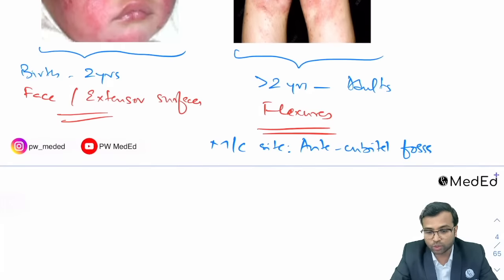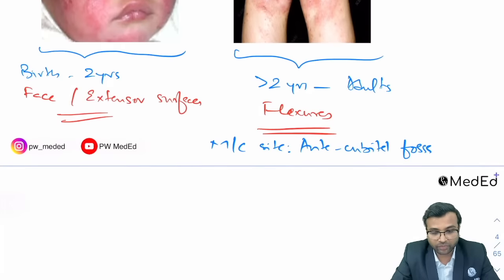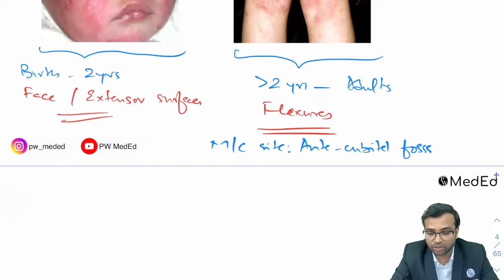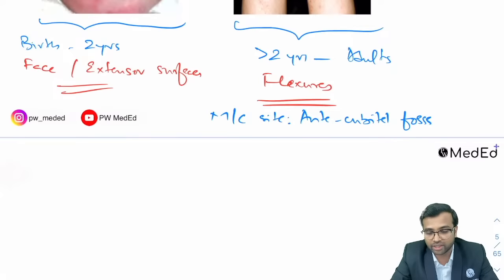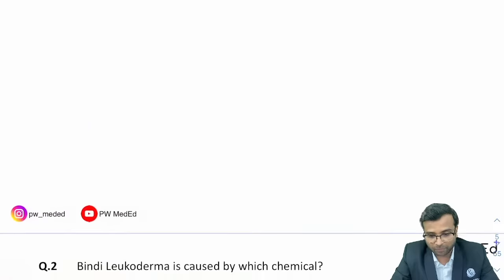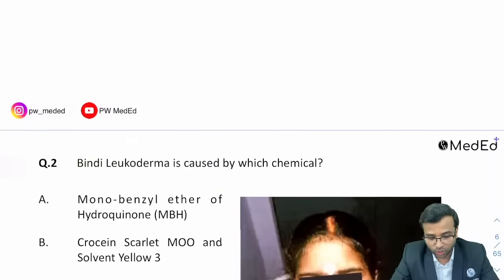The most common site of atopic dermatitis in adults is the flexors, and more specifically the antecubital fossa. Remember this for your exams — atopic dermatitis is very frequently and repeatedly asked.